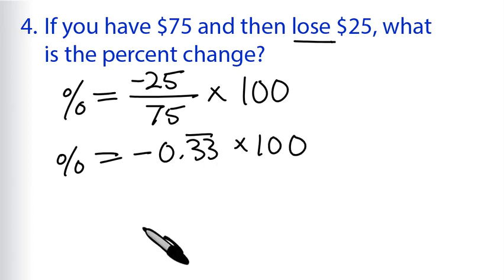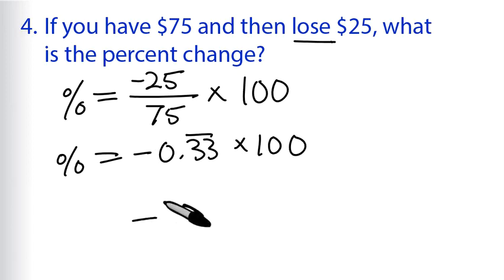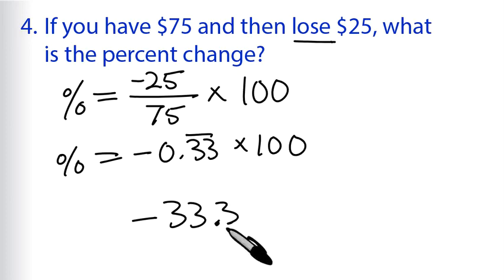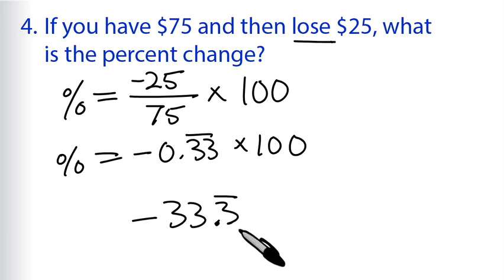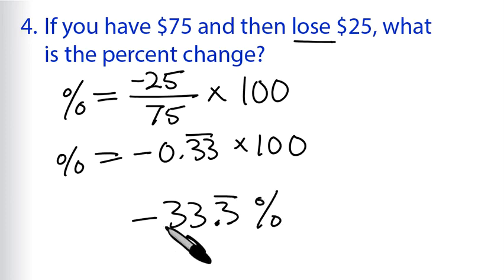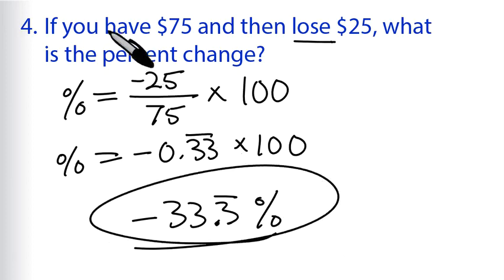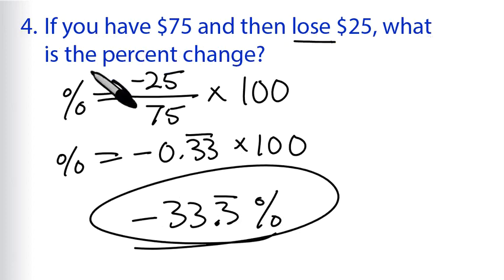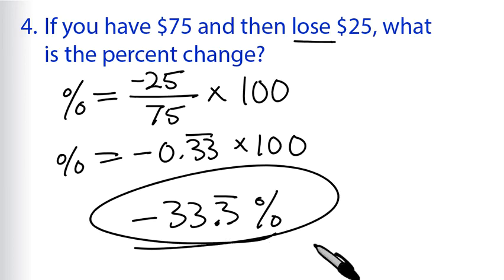When we do that, we get the percent change equals negative 33.3 repeating percent. So if you have $75 and then lose $25, the percent change is negative 33.3%, or a 33.3% decrease.